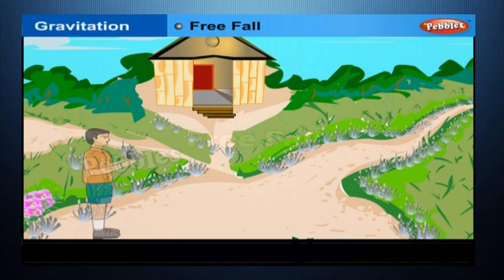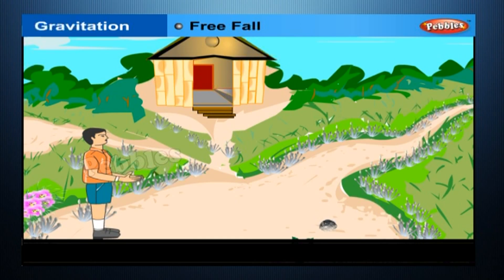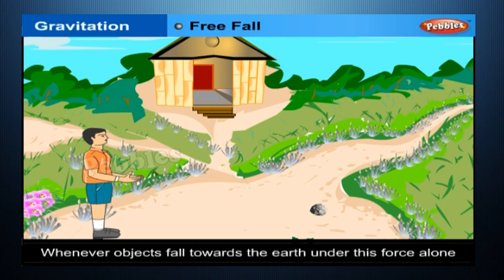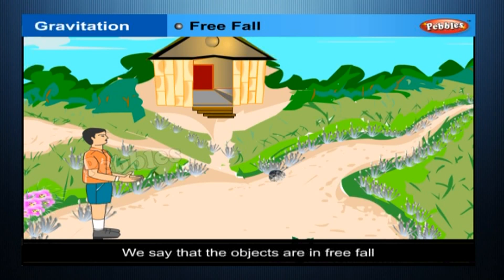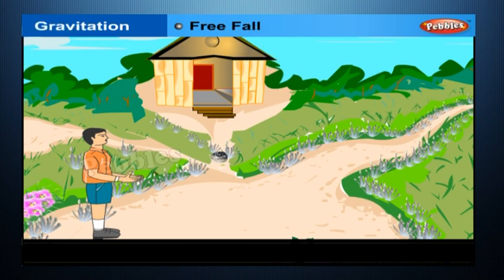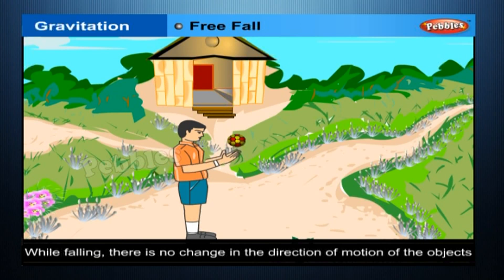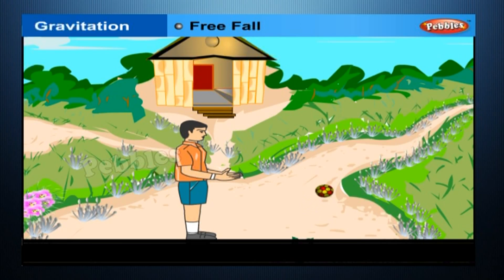Free fall: take a stone and throw it upwards. It reaches a certain height and then starts falling down. Whenever objects fall towards the earth under this gravitational force alone, we say that the objects are in free fall. Is there any change in the velocity of falling objects? While falling, there is no change in the direction of motion of the objects.